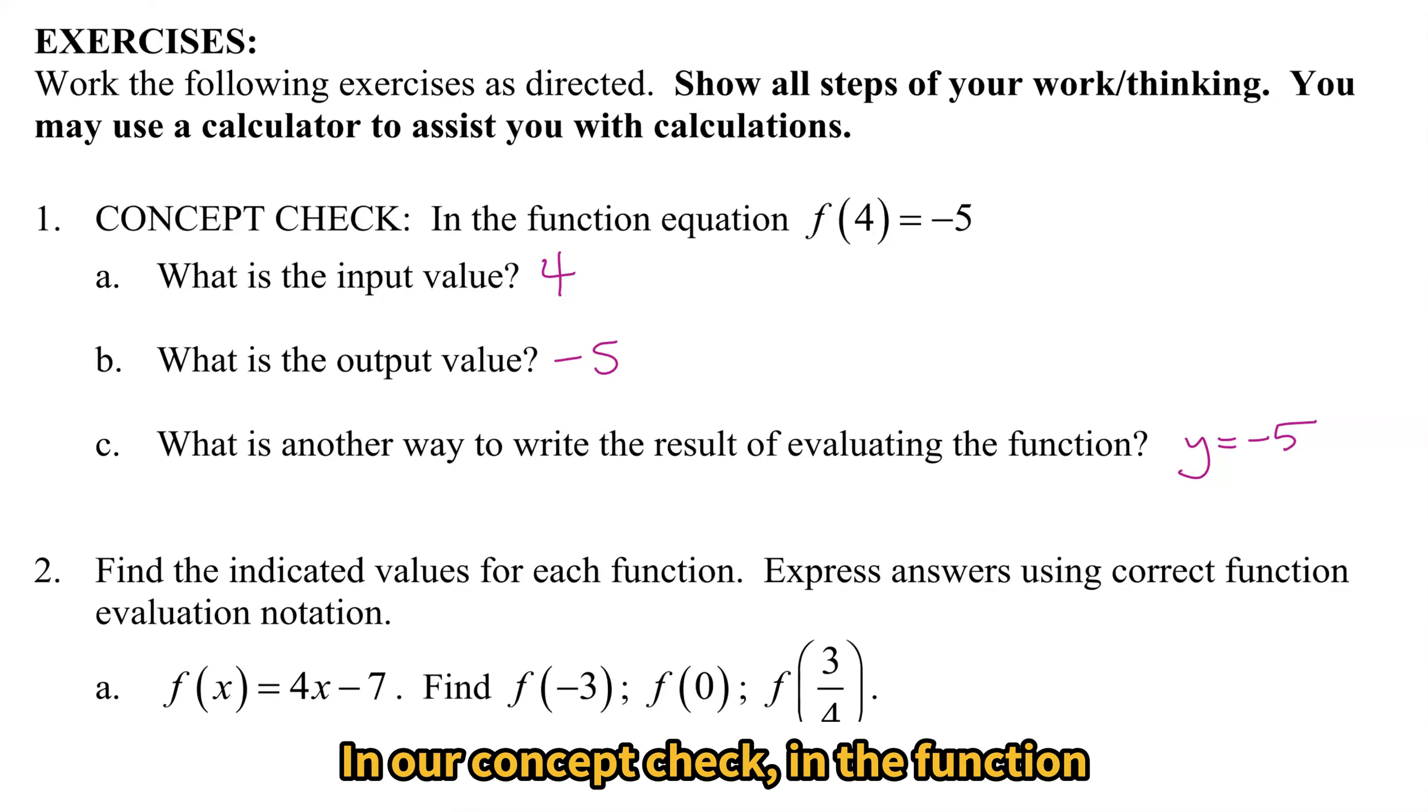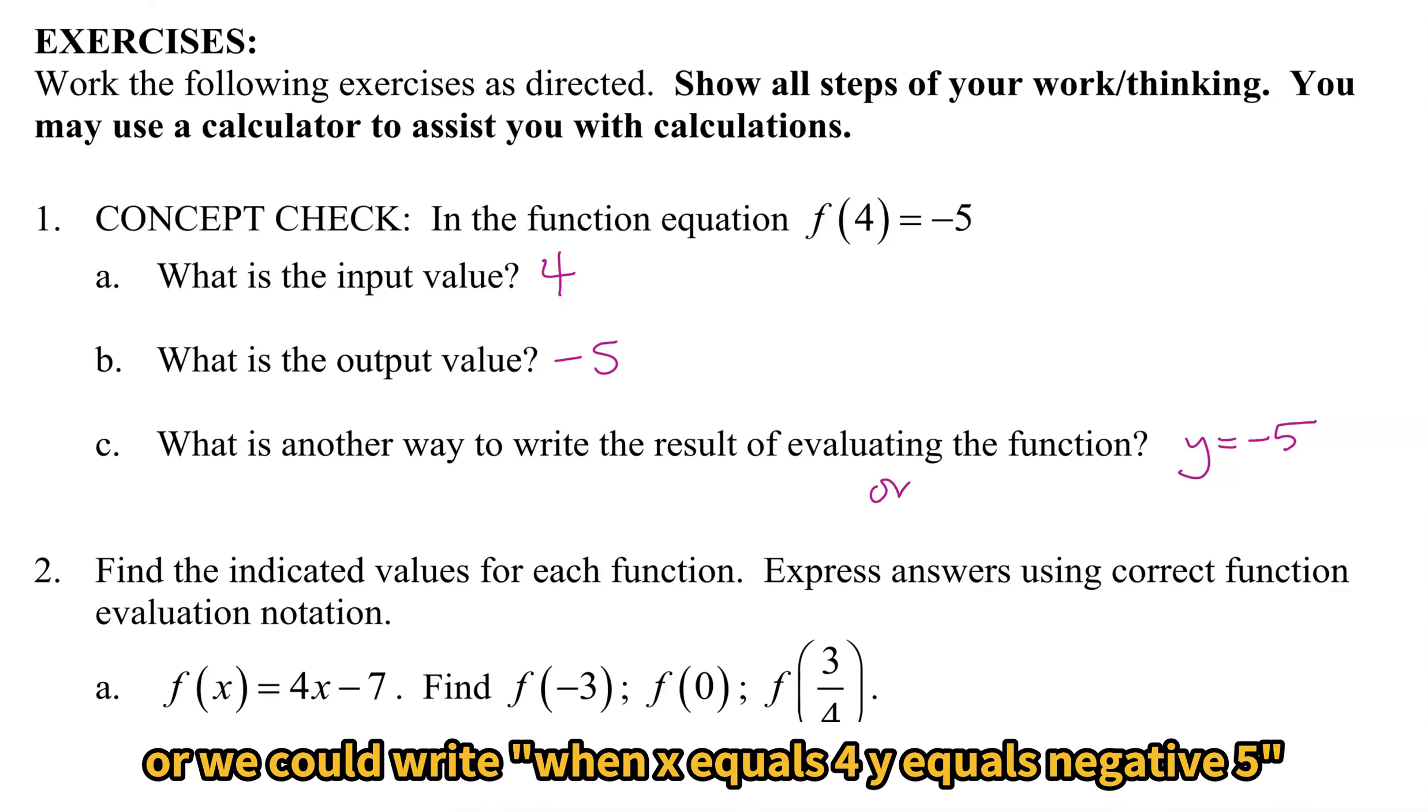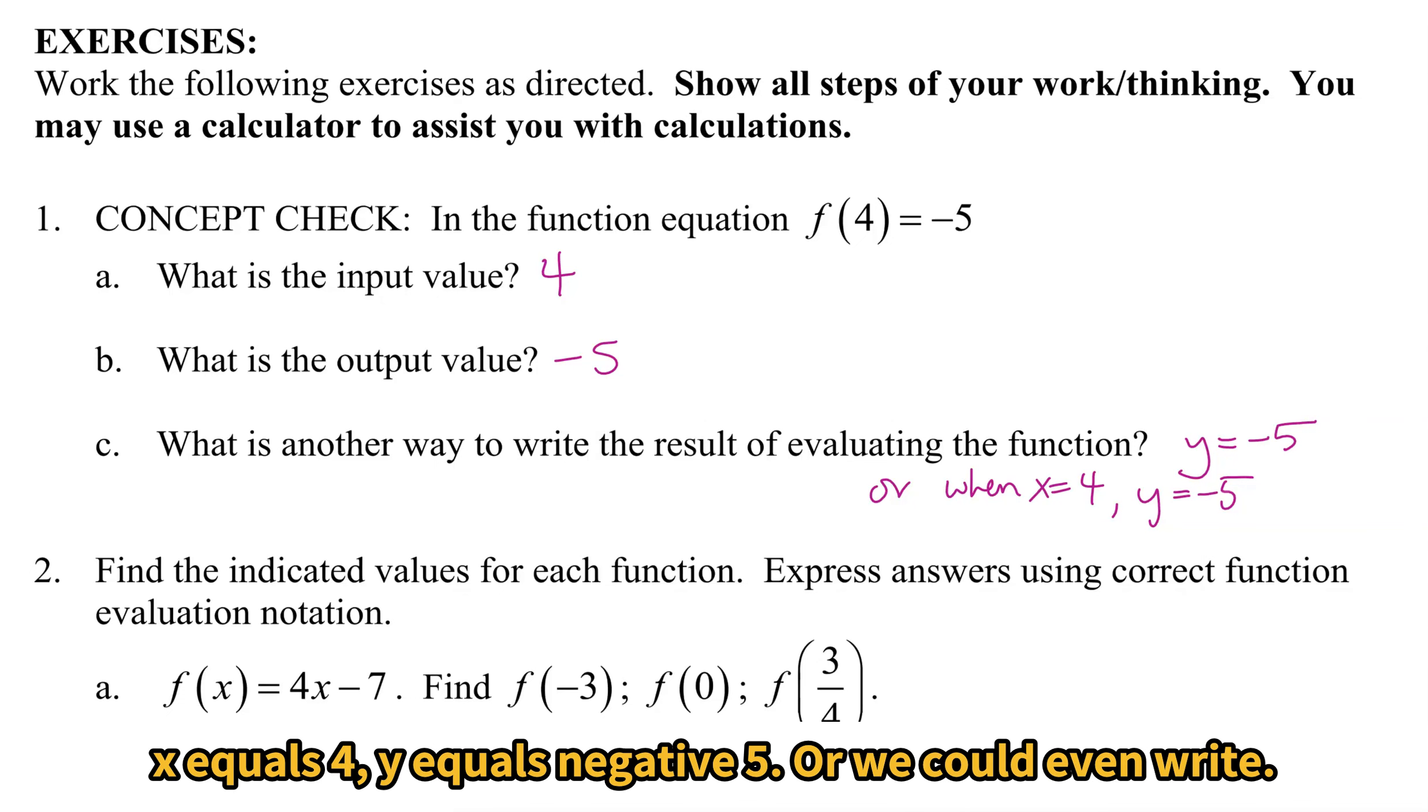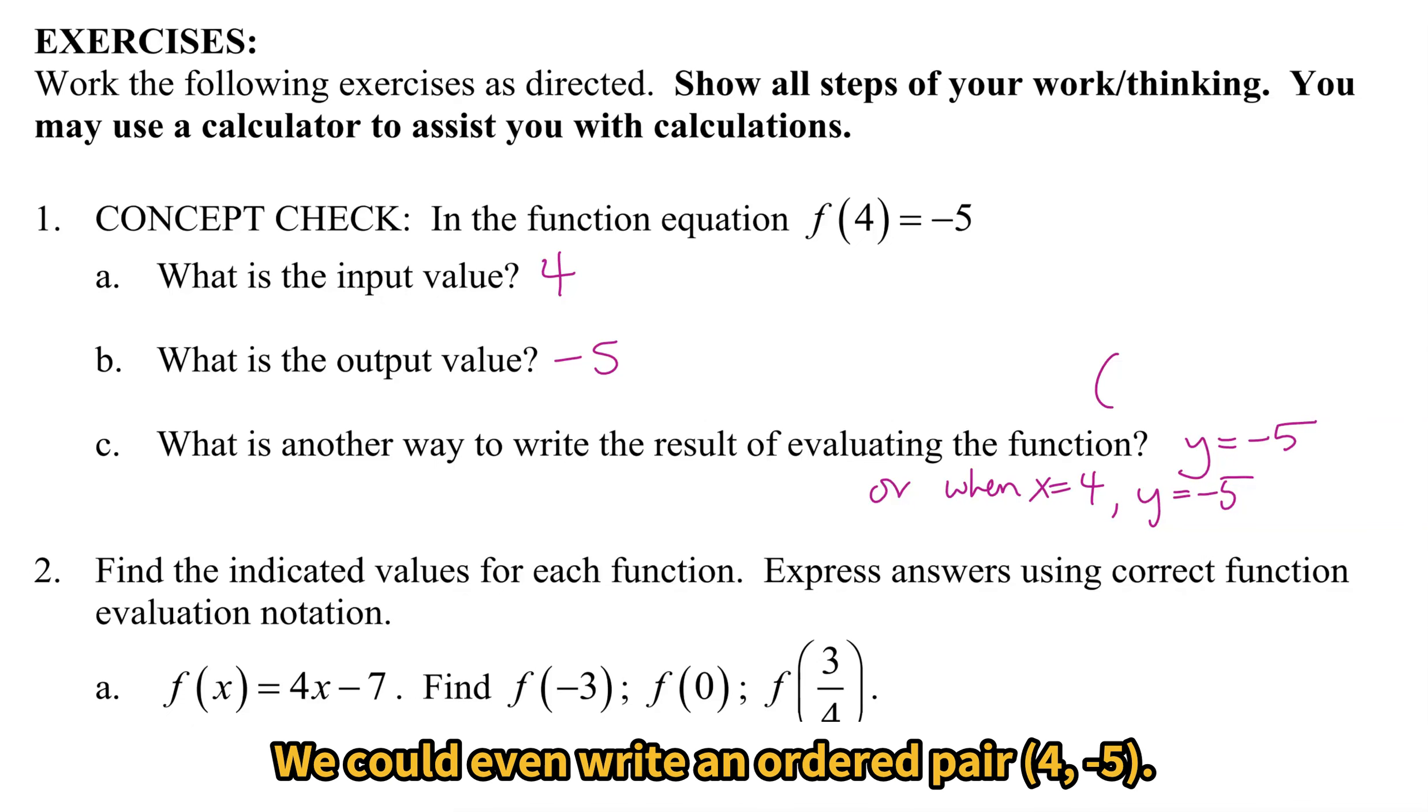In our concept check, in the function equation f(4) = -5, the input value is 4, the output value is -5, and another way to write the result is y = -5, or we could write when x = 4, y = -5, because that does give us more information about what's happening. We could even write an ordered pair (4, -5).